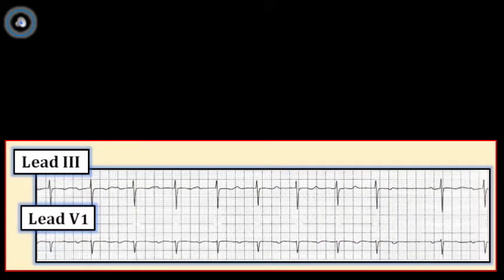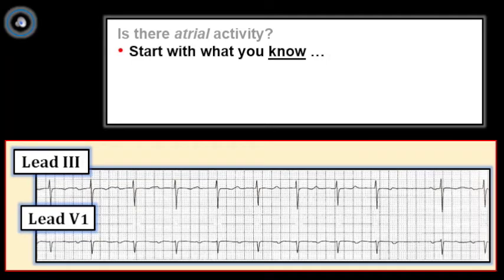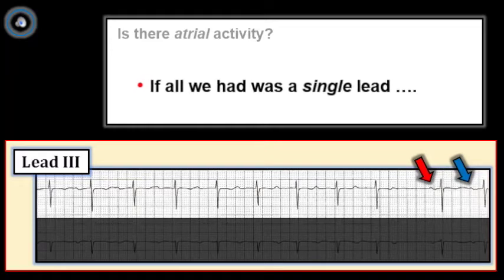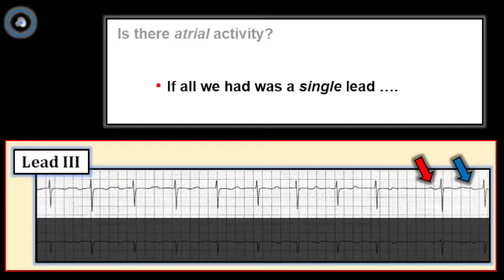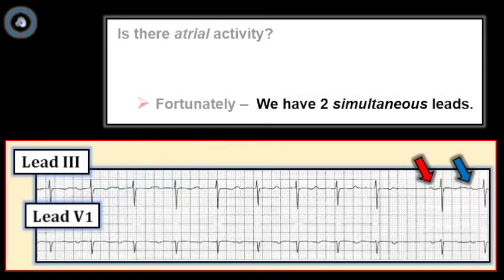Now we ask a more fundamental question: is there atrial activity in the form of P waves? I always start with what I know. There is a P wave preceding the QRS that terminates the pause toward the end of the tracing — red arrow. It also looks like there is a P wave preceding the last beat, as suggested by the blue arrow. So there is at least some atrial activity. That said, if we only had a single monitoring lead, I would not be at all certain whether additional P waves are present, as the amplitude of the deflections is just too small.